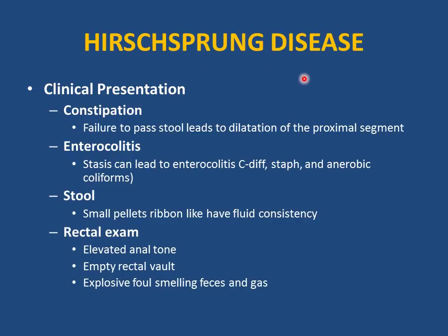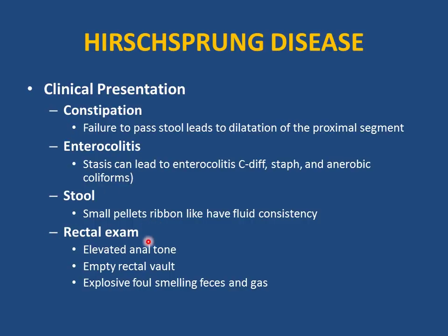Clinical presentation of Hirschsprung disease: constipation due to functional obstruction in the distal colon with proximal dilation and stool accumulation. May also present with enterocolitis and even diarrhea — stasis leads to bacterial overgrowth (C. diff, staph, anaerobes) that can cause perforation and life-threatening sepsis — a serious complication. Stool diameter is small and thin (vs. large and hard in functional constipation). Rectal examination shows elevated anal tone and empty rectal vault, with explosive foul-smelling feces and gas upon exam.